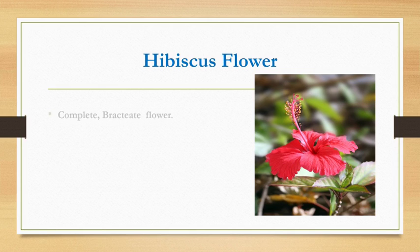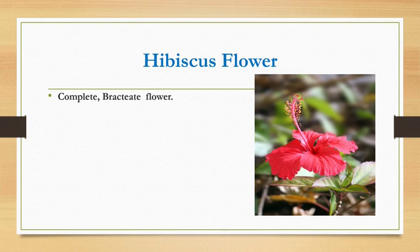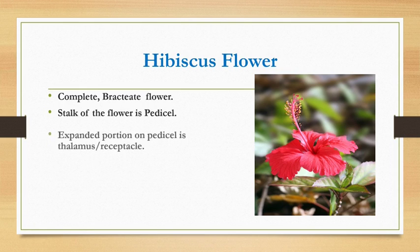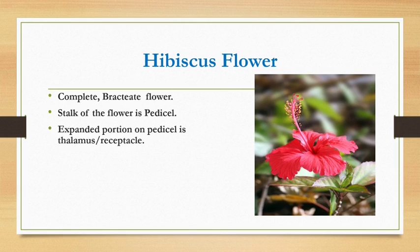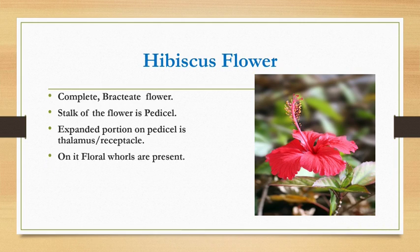This is a hibiscus flower. It is a complete flower because it consists of all the floral whorls. It is a bractiate flower because it consists of bracts. It has a stalk called pedicel, so the flower is called a pedicellate flower. The expanded portion on the pedicel is the thalamus, also called the receptacle, which is a condensed stem having nodes and internodes, on which the various floral whorls are arranged.